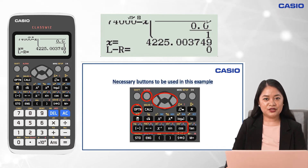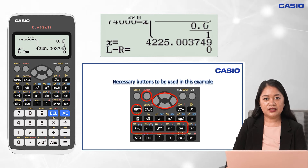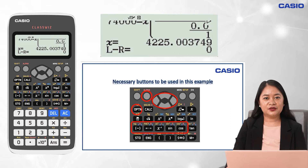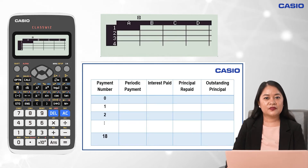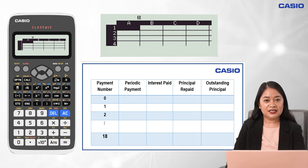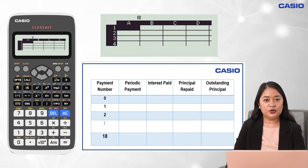Now to construct an amortization schedule, the basic buttons to be used include: Alpha, Option, Negative Symbol, Degrees-Minutes-Seconds (DMS), X raised to negative 1, Sine, Cosine, and the Arrow Keys. We will use the Spreadsheet menu of Casio Classways by pressing Menu and A. Since the payment is every end of the month for 1 year and 6 months, the total number of payments is 18. We input the payment numbers in column A of the spreadsheet: 0, 1, 2, 3, 4, and so on, pressing the Equal button after each value.